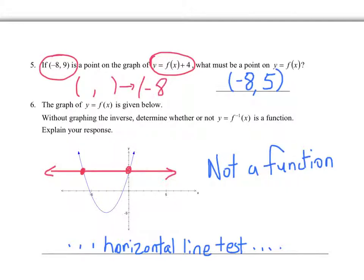So negative 8 comma 9 is the result of adding 4 to the y value. So the original y value is positive 5, and the x value remains unchanged at negative 8. Okay, next question.